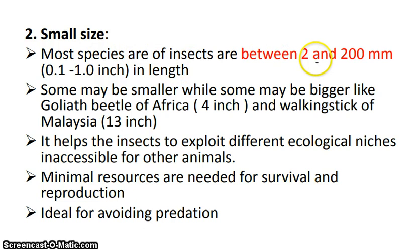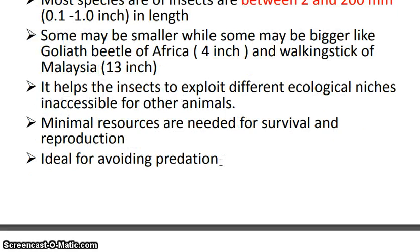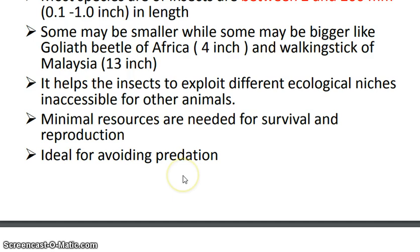Insect size is small, ranging between 2 to 200 mm in length, though some insects can be large, like the Goliath beetle of Africa at 4 inches, or the walking stick insect of Malaysia at 13 inches. Small size helps insects explore different ecological niches inaccessible to other animals, and minimal resources are needed for their survival and reproduction.